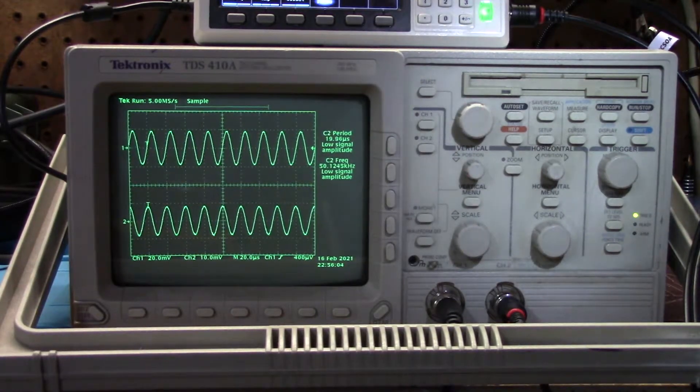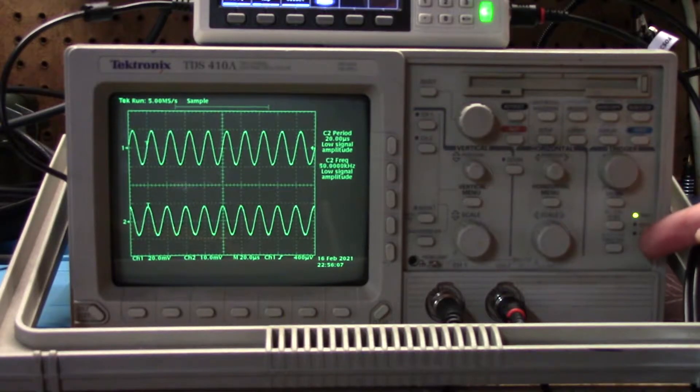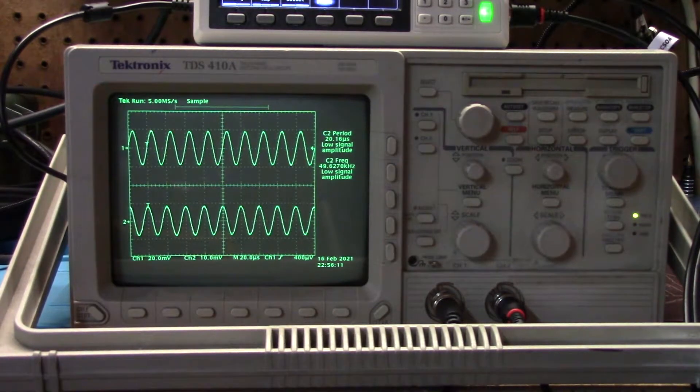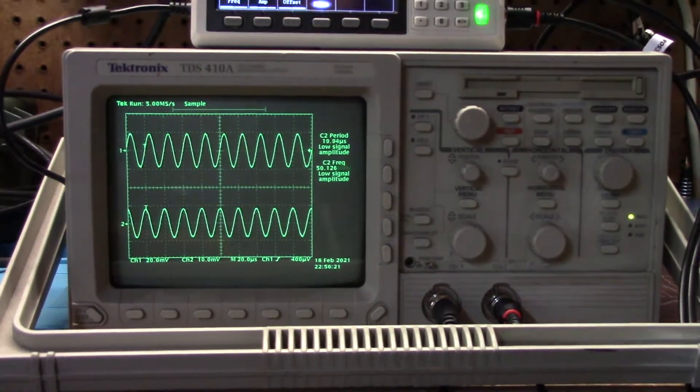And then of course it has a setup button and then our triggering functions are all over here on the side. I've got it in normal mode so it just keeps rolling and re-triggering automatically over and over. This scope has one other really cool feature that I want to show you before I wrap this video up and I got to move the camera a little bit for this so bear with me just a second.